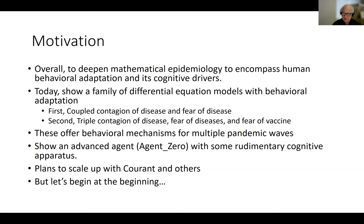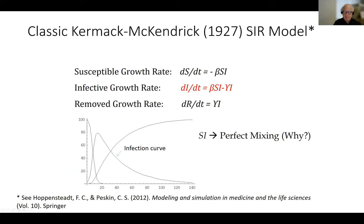I don't know how many of you are familiar with epidemiology, so let's start at the very beginning. The whole field of mathematical epidemiology — the real modern theory begins with the publication of the Kermack-McKendrick model in 1927. This is called the SIR model because the compartments are susceptible, infected, and removed. It's a constant population model where there are susceptibles S at time T and infectives I at time T.